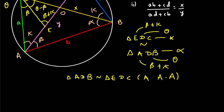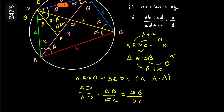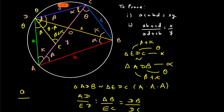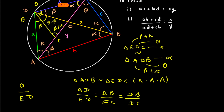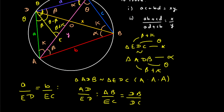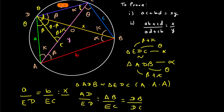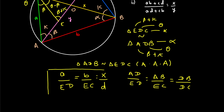Since the two triangles are similar, the ratio of their sides is equal: AD upon ED equals AB upon EC equals DB upon DC. Now substituting the variable labels from the diagram — the length of AD is a, ED is ED, AB is b, EC is EC, and the diagonal DB is x, while DC has length d — we have taken the same ratio but expressed as variables.